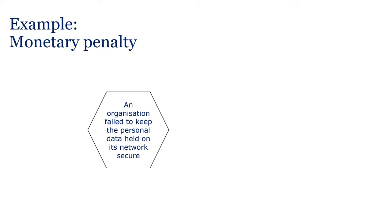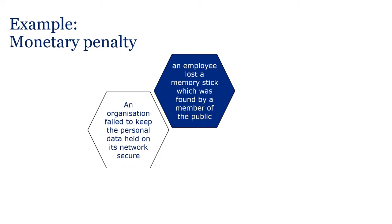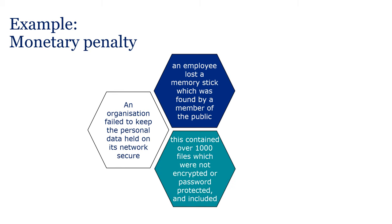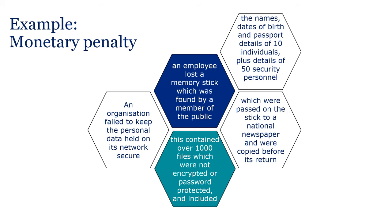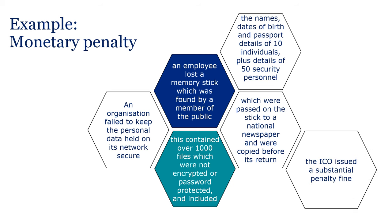In another example, an organisation failed to keep personal data held on its network secure. An employee lost a memory stick found by a member of the public. It contained over 1,000 files which were not encrypted or password protected, including names, dates of birth and passport details of 10 individuals, plus details of 50 security personnel. The data was passed to a national newspaper and copied before the stick's return. The ICO issued a substantial penalty fine.